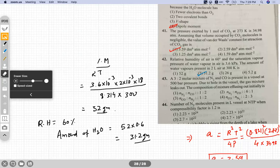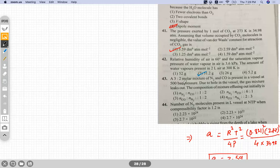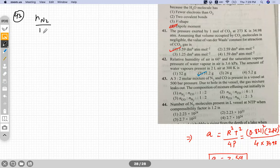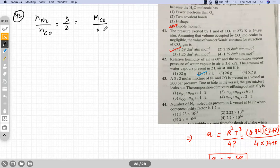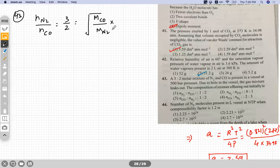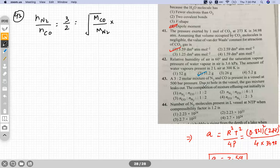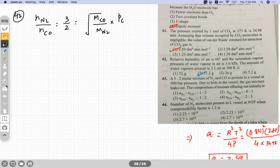Question 43. A 3 by 2 molar mixture means the number of moles of N2 by number of moles of CO equals 3 by 2 given in the question at 500 bar. Due to a hole in the vessel the gas leaks out. The rate of diffusion would be molecular mass of CO divided by molecular mass of N2, root over of it, into the pressure of CO. We have N2 here, it will be the pressure of N2 divided by the pressure of CO.